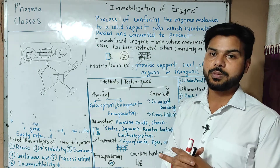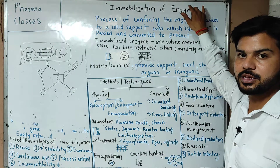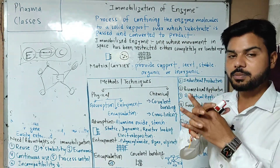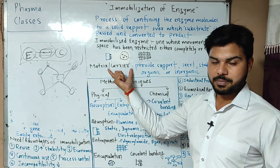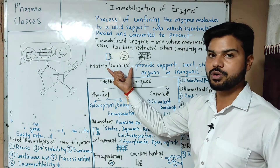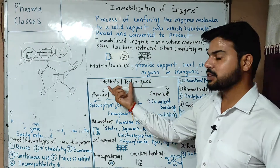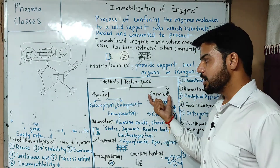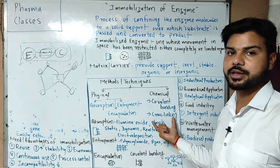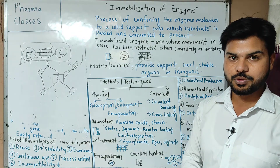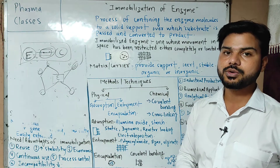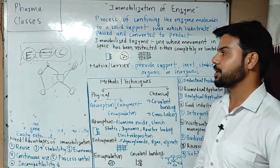In summary, immobilization is a process in which you confine and entrap the enzyme into a particular solid matrix — which can be inorganic, organic, or synthetic compounds. The physical methods used are adsorption, entrapment, and encapsulation; the chemical methods are covalent bonding and cross-linking. This was the session about immobilization of enzyme. If you explain this in exams, this would be a good answer for that particular question. Thank you and all the best.